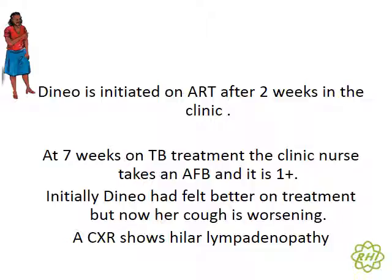Continuing with Denio, she was initiated on ART after two weeks in the clinic. At seven weeks on TB treatment, the clinic nurse takes AFBs as required, and it comes back one-plus positive. The nurse refers the patient to the doctor. You discover that Denio had initially felt much better on treatment, but now her cough is worsening. On X-ray you see hilar lymphadenopathy, so her clinical picture has worsened from when she initially started TB treatment.